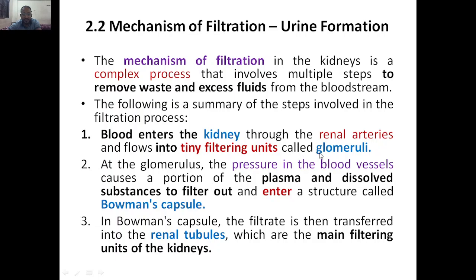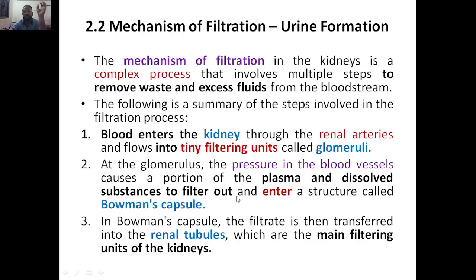Blood enters the kidney through the renal arteries and flows into the tiny filtering units called glomeruli. At the glomeruli, pressure in the blood vessels causes a portion of the plasma and dissolved substances to filter out and enter the structure called Bowman's capsule. The pressure in the blood vessels causes the plasma and dissolved substances to be filtered out — there will be waste as well as molecules like glucose, which will later be reabsorbed. All these molecules and dissolved substances will be filtered there.